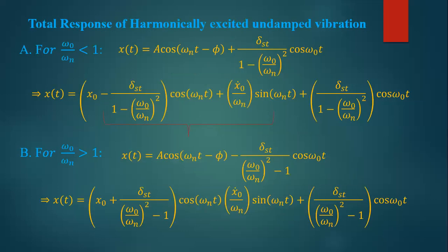The total response can be seen for two regions. One of the regions is for omega naught over omega n less than one. This is one of the regions, which we have seen in the last discussion in lecture 7. So the response for this region is x of t equals to a cos omega n t minus pi plus...